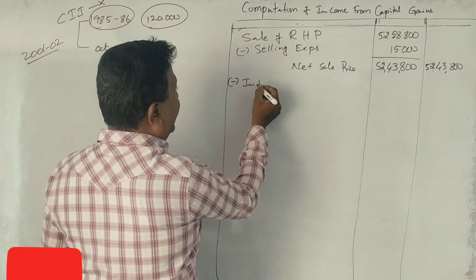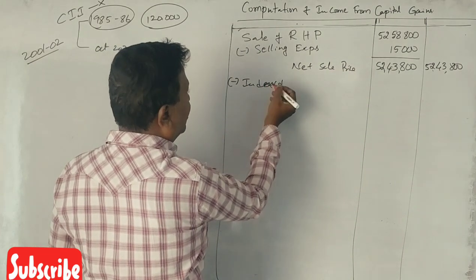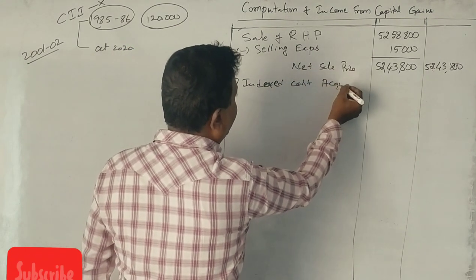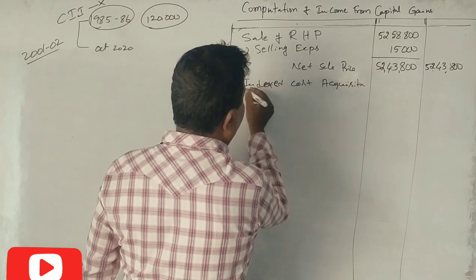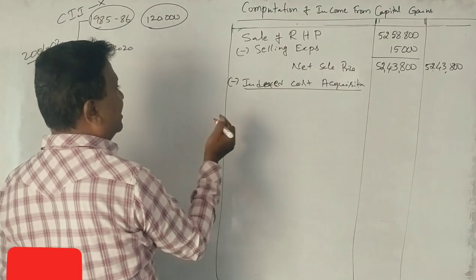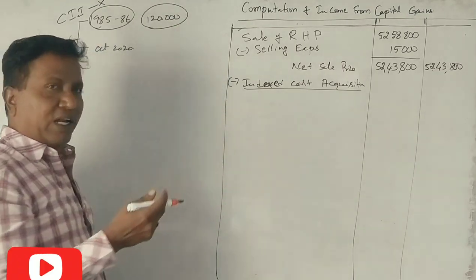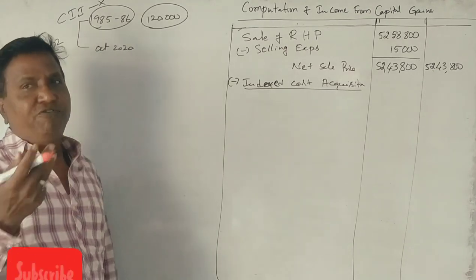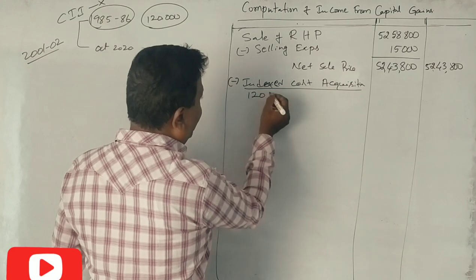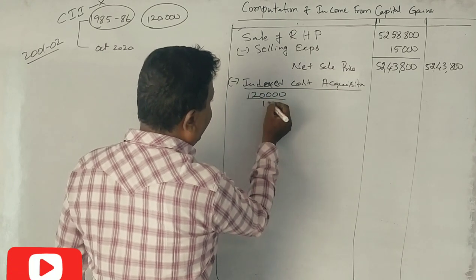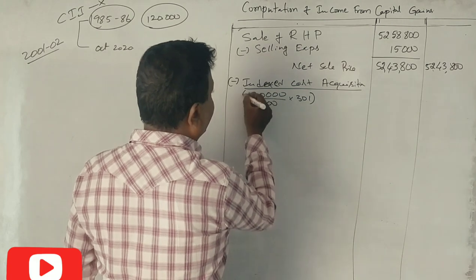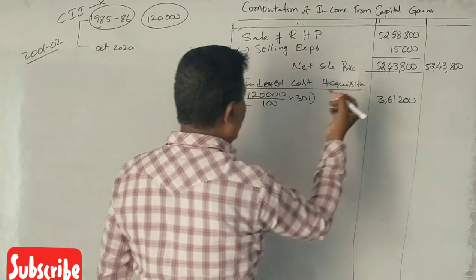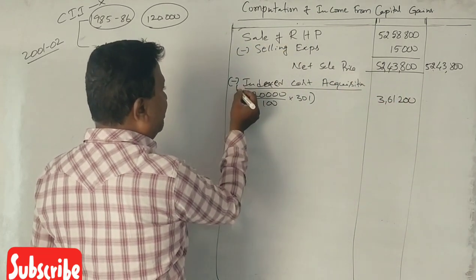This is the indexed cost of acquisition. Purchase in 1985-86, the cost is Rs. 1,20,000. Fair market value Rs. 1,20,000 divided by 100 into 301. That is Rs. 3,61,200.